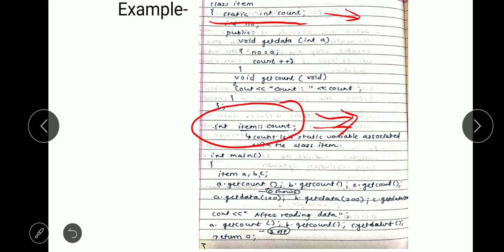This program has two functions: getData and getCount. Inside getCount we print the particular data, and inside getData we increment the static variable — that is count++. Using a.getCount, b.getCount, and c.getCount, the count value is initially zero because by default all static variables are initialized to zero. With the first call the value of count gets incremented to one.